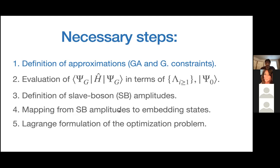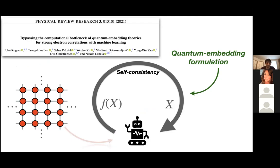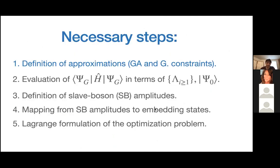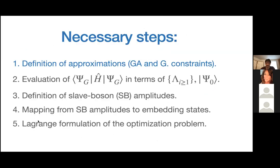The second change of variables introduces what are called embedding states — states belonging to this auxiliary impurity model. This is also a step carrying physical meaning: it allows connection to quantum embedding schemes and a unified perspective together with dynamical mean-field theory, density matrix embedding theory, and other quantum embedding methods. The final step is the definition of a Lagrangian function for setting up the optimization problem.